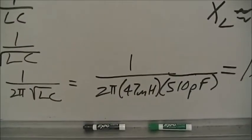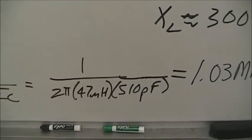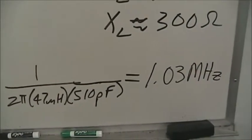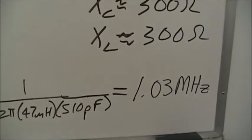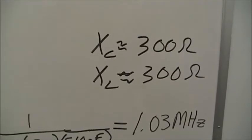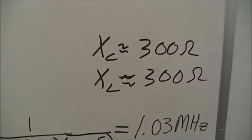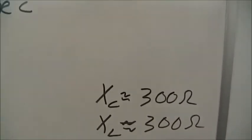47 microhenry inductor and 510 picofarad capacitor, we get 1.03 megahertz. If we did the calculations, we'd see that XC and XL are both 300 ohms.